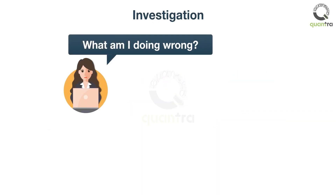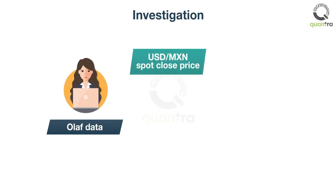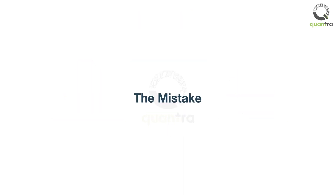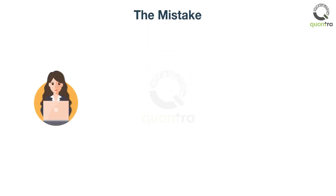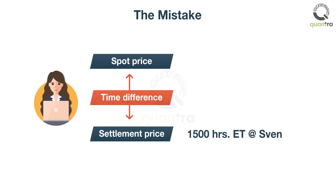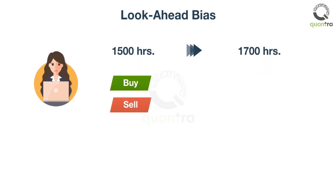So what was it that Anna was doing wrong? On further investigation, Anna realized that the USD-MXN spot close price from the OHLC data was completely different from that of Elsa. The spot and settlement prices used in the strategy were sampled at two different times. The futures settlement price is obtained at 1500 hours ET, while the spot price is obtained at 1700 hours ET by the OHLC data. She was inadvertently looking two hours into the future — making trading decisions at 3 p.m. based on spot price data from 5 p.m.